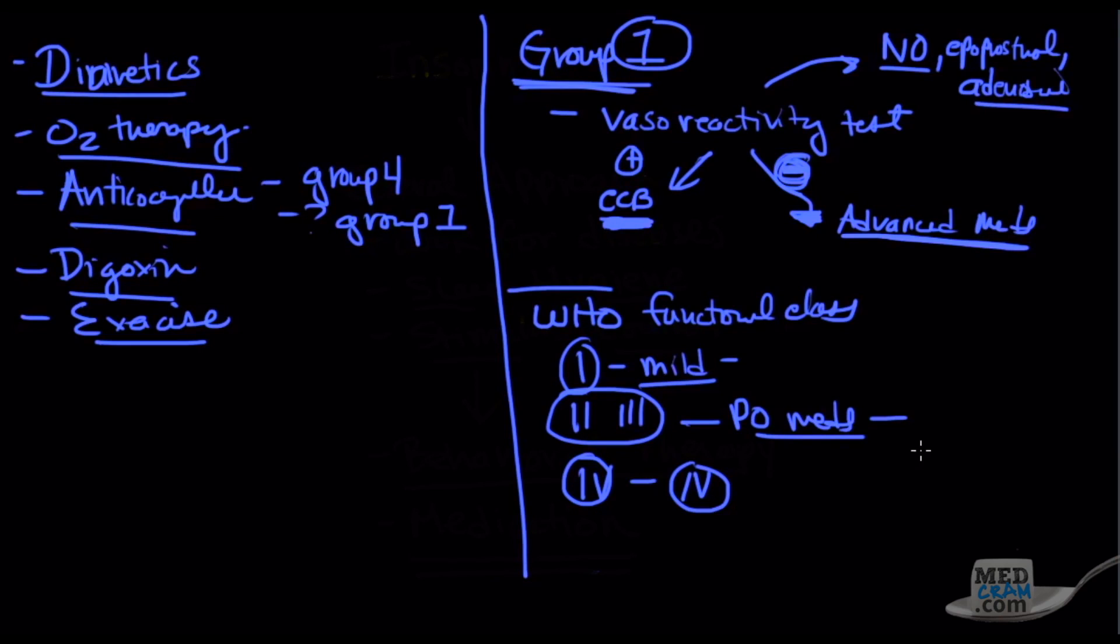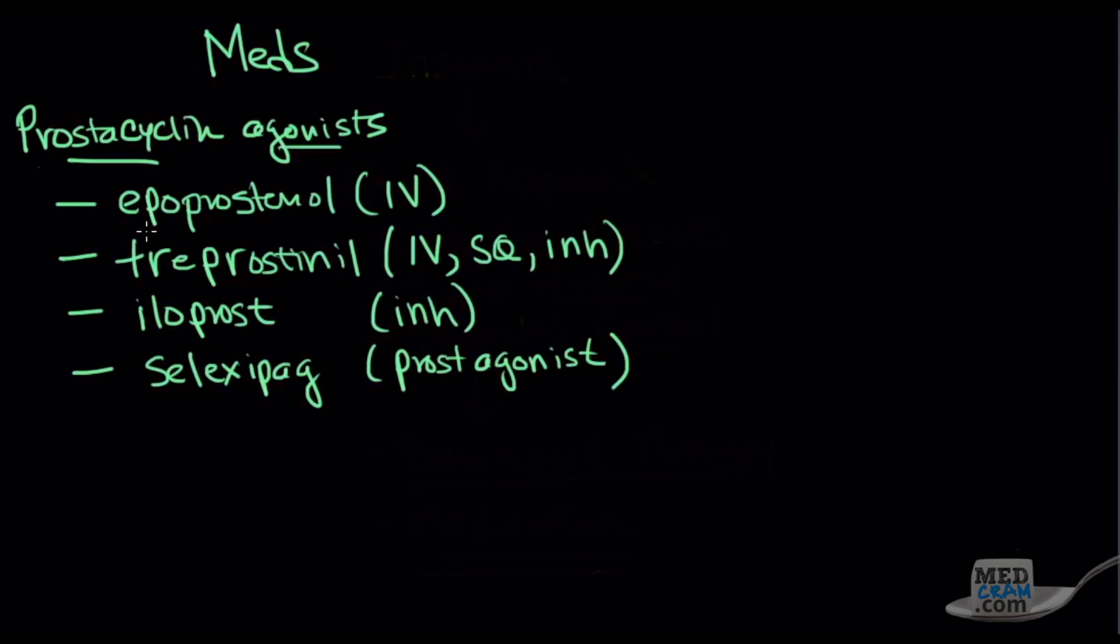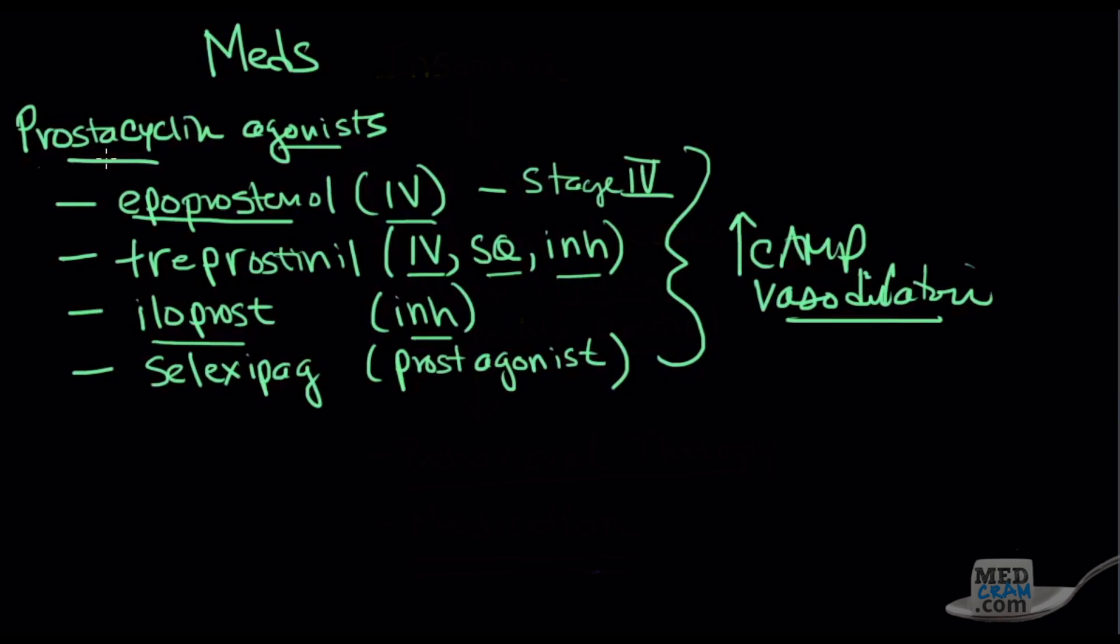If they don't respond to the vasoreactivity test and they're a WHO class two or three, then you're going to be starting them on some PO meds. The first category is the prostacyclin agonists. This is like epoprostenol IV, which is indicated for stage IV. There's treprostinil, which can come IV, sub-Q, or inhaled. There's iloprost, which comes inhaled. And then there's prostacyclin agonists which are not really prostacyclins, like selexipag, which all of these things stimulate the prostacyclin receptor and in effect cause an increase in cyclic AMP and therefore vasodilation.